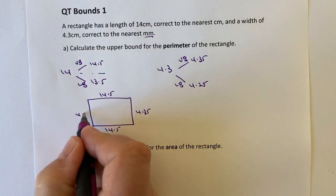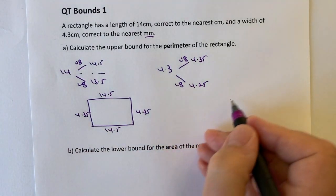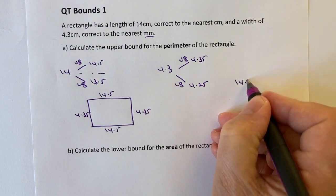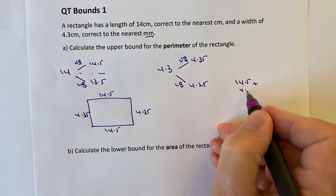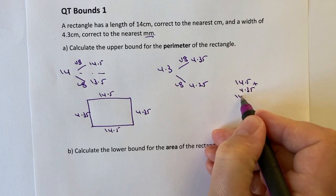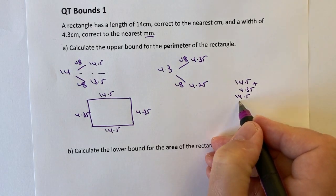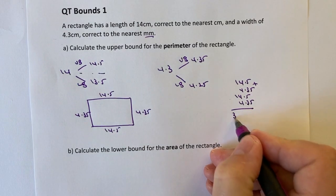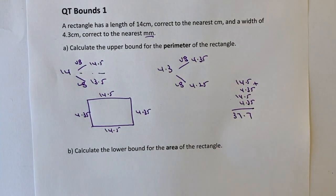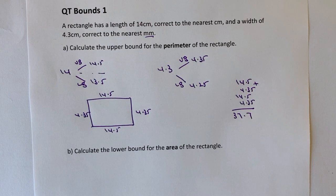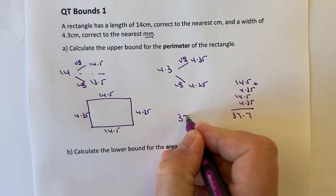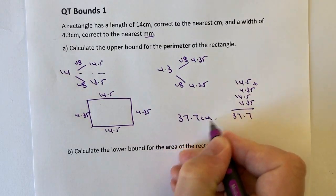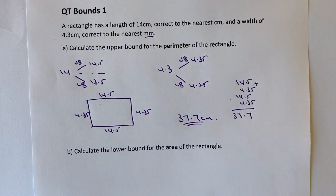And if we calculate all of these added up together, so we're going to have 14.5 plus 4.35 plus 14.5 again, plus 4.35. If we add all of that together, we're going to get 37.7. So the upper bound, the biggest this perimeter could actually be, is going to be 37.7 centimetres. And that would answer that particular question.